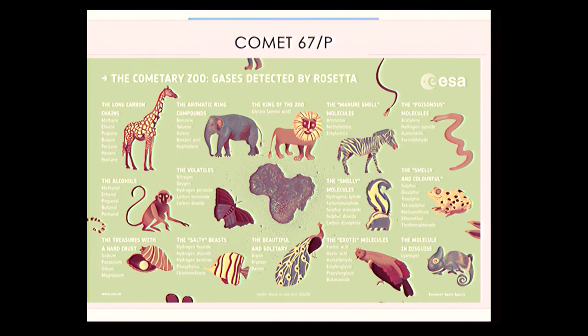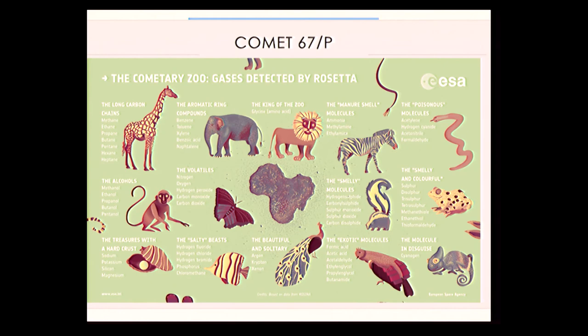In addition to the density and structure of 67P, the Rosetta mission discovered tons of molecules — the benefit of actually going somewhere. Rather than passively collecting light, you gather material with a mass spectrometer and see everything. This was the 'cometary zoo' press release, showing stinky molecules for the skunk, salty molecules, alcohols like methanol and ethanol. We have wonderful samples of the end products of planet formation.